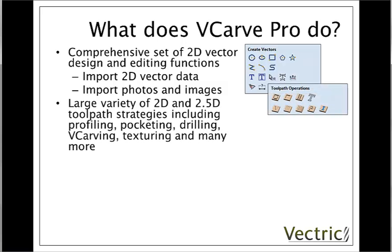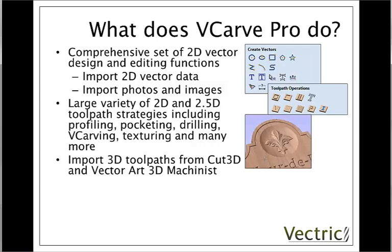Once you've got your design, there's a large selection of toolpaths to choose from. These include 2D toolpaths like profiling, pocketing, and drilling, and what's typically referred to as 2.5D toolpaths like VCarving, texturing, and many more. In addition to the toolpaths we can calculate inside the software, we also have the ability to import 3D toolpaths from other Vectric programs, such as Cut3D and VectorArt 3D Machinist, in order to combine these with the toolpaths within VCarve Pro itself.